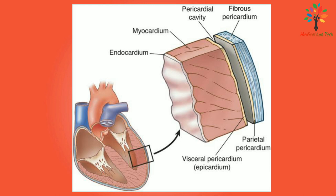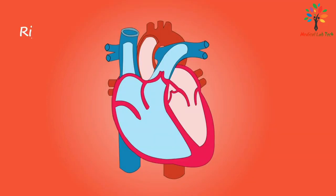There is a fluid present between the two serous membranes, which is known as pericardial fluid. The middle layer is the myocardium, which is composed of specialized cardiac muscle found only in the heart. These muscles are striated like skeletal muscle, but are not under voluntary control. The innermost layer of the heart is known as the endocardium, and it lines the chambers and valves of the heart. The endocardium is a very thin and smooth membrane to ensure the smooth flow of blood through the heart.